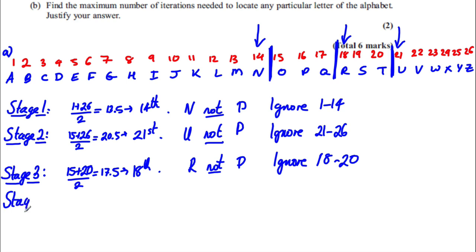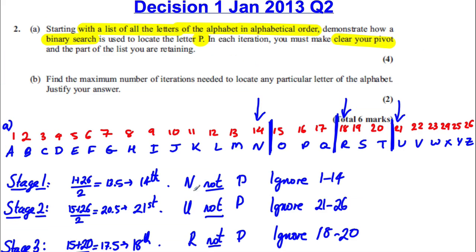And stage 4, we have left over here. So we add the first 15 plus the 17 over 2, which is the 16th term. And the 16th term is P and P is located. And there we have demonstrated every step, everything we've discarded and pivoted at each stage along the process. And we've got our four marks here.